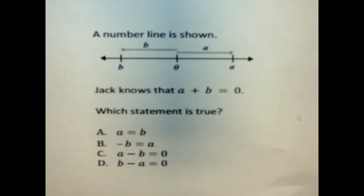This problem has a number line, and it says that Jack knows that A plus B equals zero. So, we're trying to figure out what statement is true.